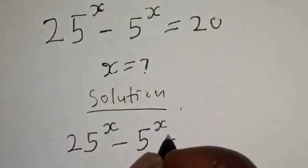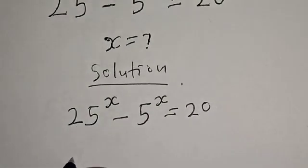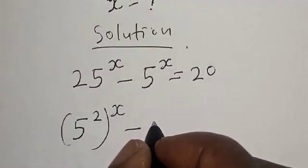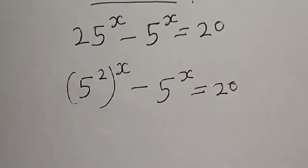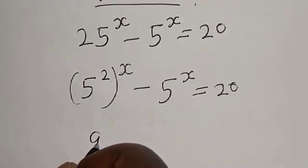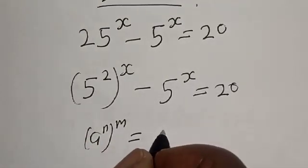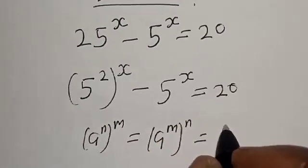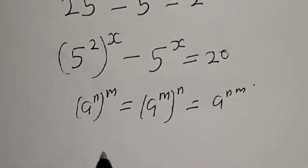25 raised to power x is the same thing as 5 squared, raised to power x, minus 5 raised to power x is equal to 20. Using the identity: a raised to power n, raised to power m, equals a raised to power n times m. We apply this identity here.